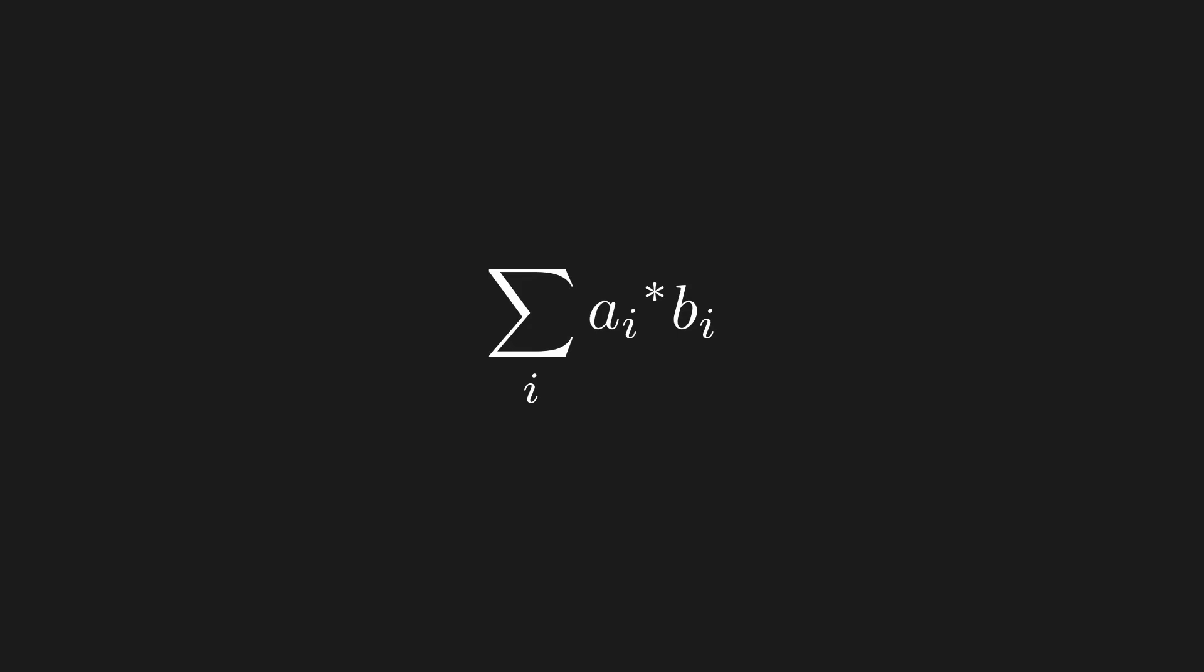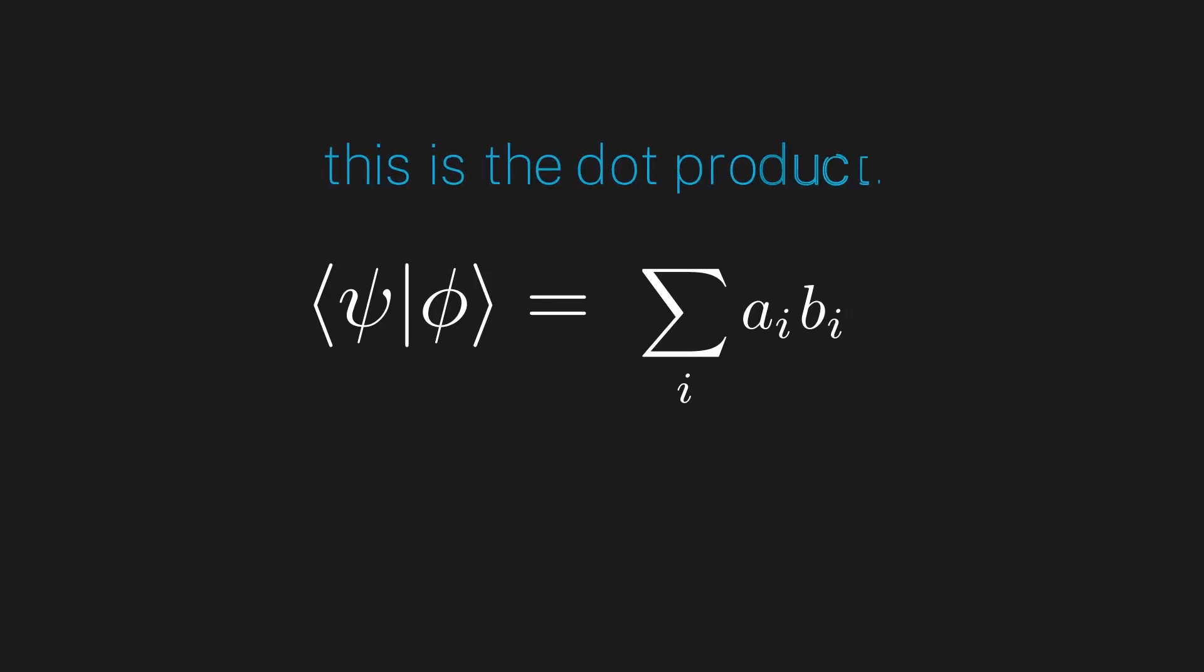The Kronecker delta allows us to collapse sums easily. We just have to match the two indices. Awesome, and look at what we're left with. It may look weird, but let's say all the coefficients were real numbers. This means the conjugation doesn't do anything. And, we are left with the following. Look familiar? This is the dot product. We made no mention of the dot product in our definition of the inner product, yet here it is. So, hopefully you see that the dot product is what you get when you look at the inner product in a particular orthonormal basis.